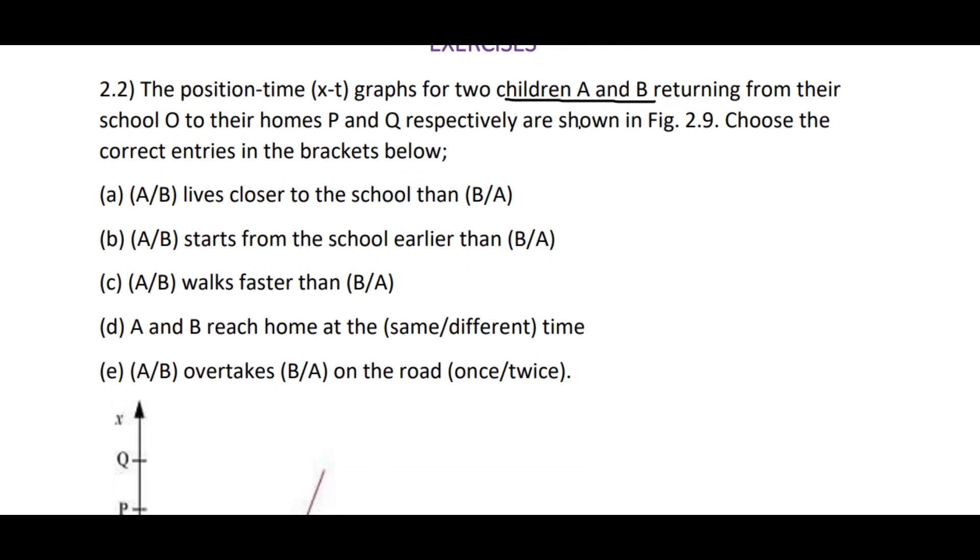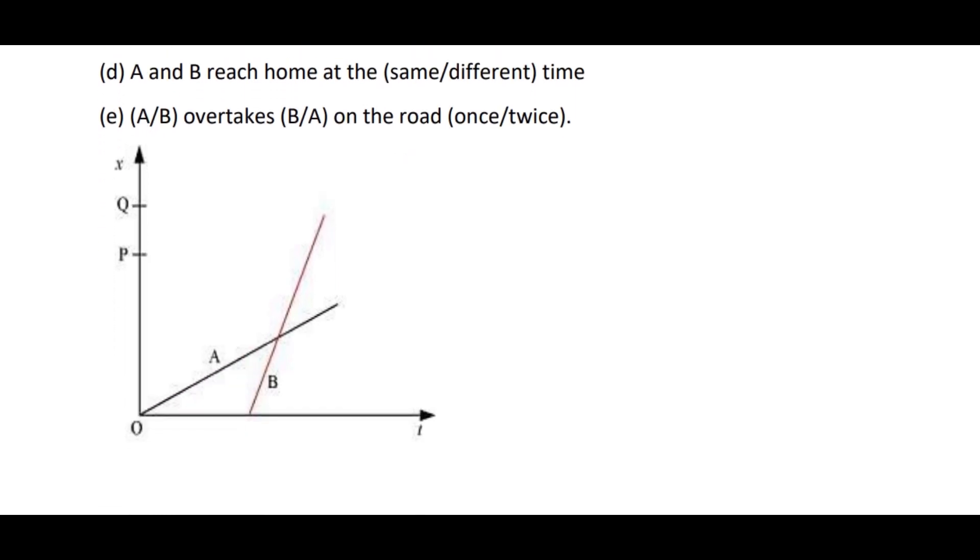This is the x-t graph, that is the position-time graph. P and Q are the homes of children A and B. P is the home for child A, and Q is the home for child B respectively.